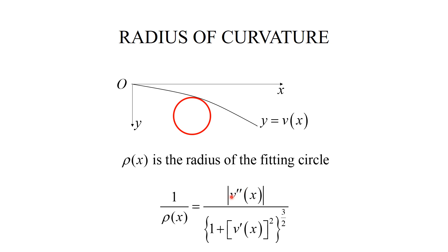Note that there is an absolute value of v double prime in the expression. The reason we need the absolute value is because the radius is a non-negative value. The fitting circle could be on different sides, so we must differentiate between them. More importantly, we have positive bending and negative bending, and we need to sort out what the difference is.